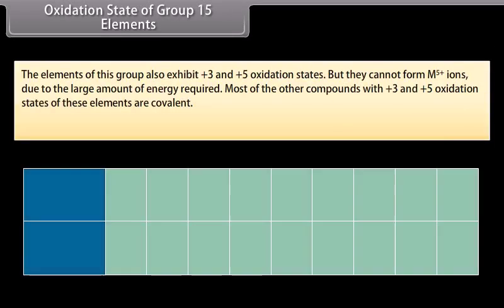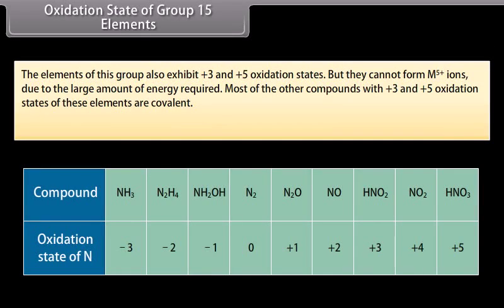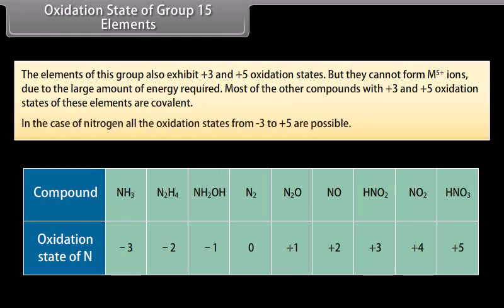The elements of group 15 also exhibit plus 3 and plus 5 oxidation states, but cannot form M5+ ions due to the large amount of energy required. Most compounds with plus 3 and plus 5 oxidation states are covalent. In the case of nitrogen, all oxidation states from minus 3 to plus 5 are possible.